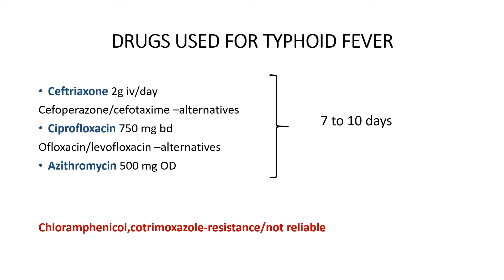A short note on drugs used for typhoid fever: typhoid is caused by Salmonella typhi. Ceftriaxone is the first choice drug, given at a dose of 2 grams IV per day; alternatives include cefoperazone and cefotaxime. The second choice is ciprofloxacin at 750 mg BD, with alternatives ofloxacin and levofloxacin. The third choice is azithromycin 500 mg OD. All these drugs are given for 7 to 10 days. Chloramphenicol and cotrimoxazole were previously used for typhoid but are no longer reliable due to development of resistance.